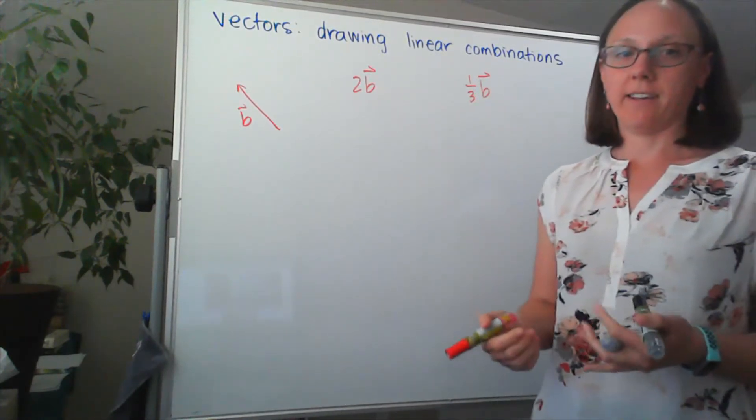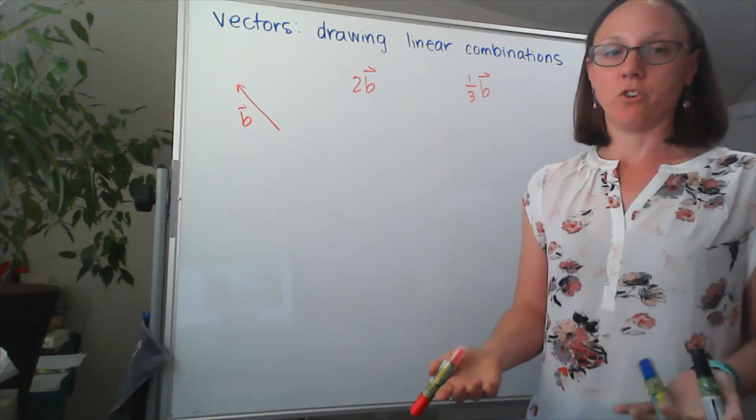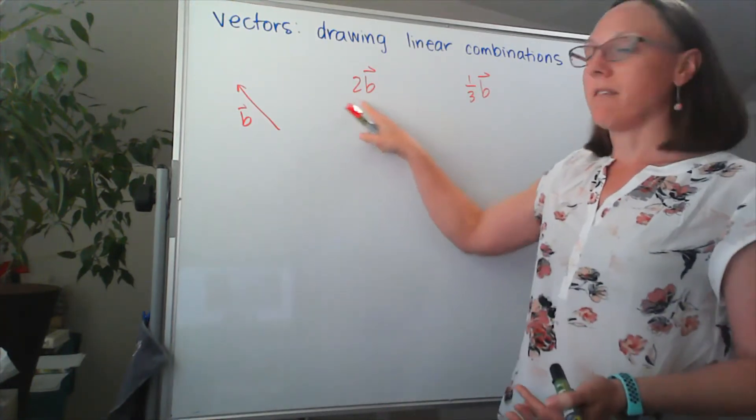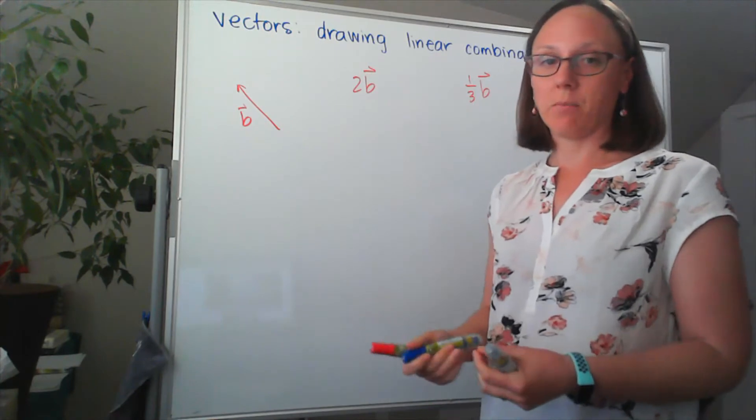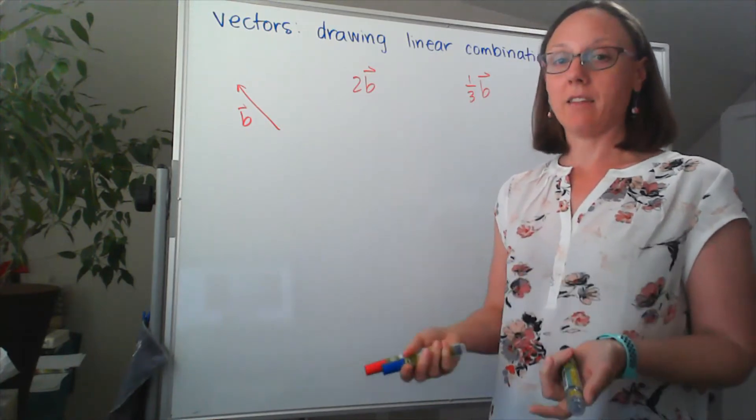Every vector has both a direction and a magnitude, or a direction and a length. Multiplying that vector by two is the same thing as changing its length, but not the direction.